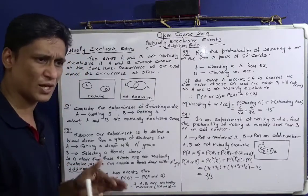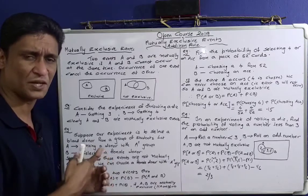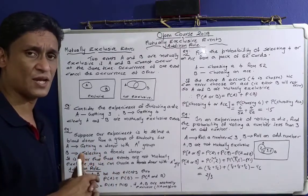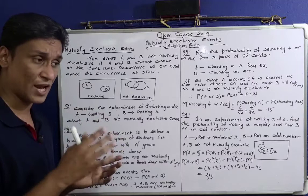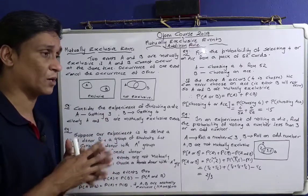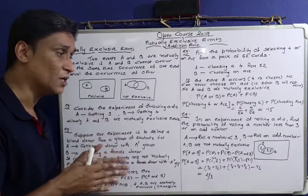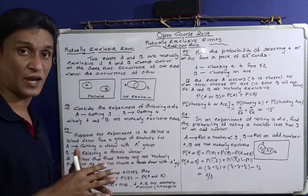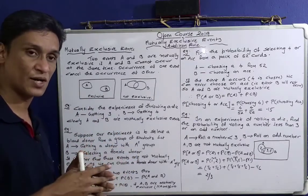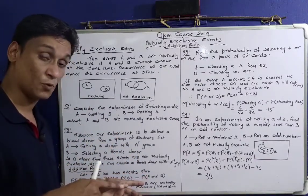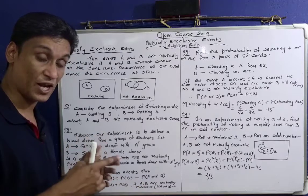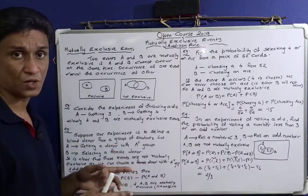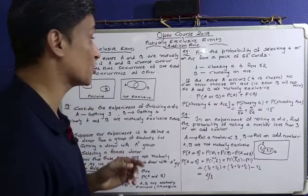So the probability of A or B equals probability of A plus probability of B minus probability of A and B. Since A and B are mutually exclusive, P(A and B) = 0. Therefore, the probability of A or B is simply the probability of A plus the probability of B. That is our Addition Rule.